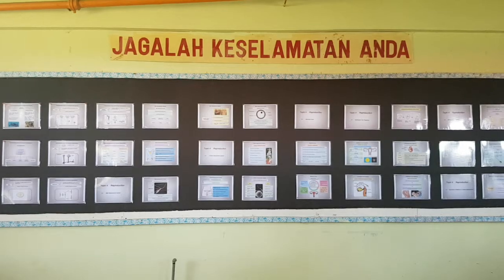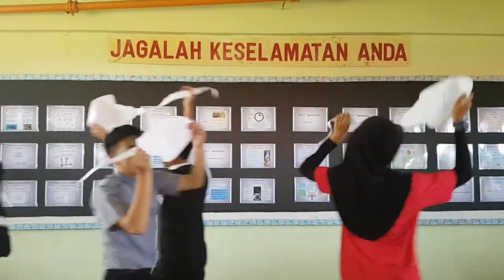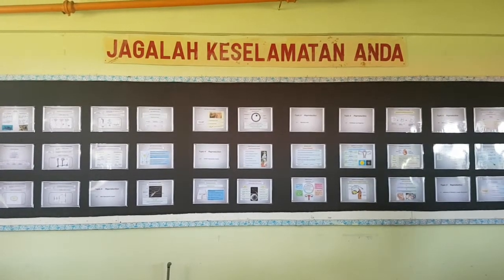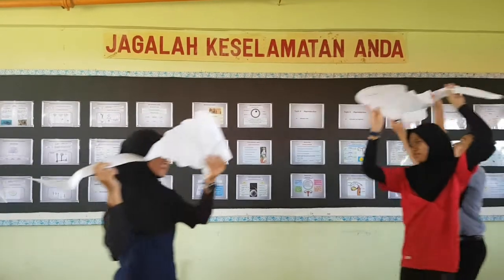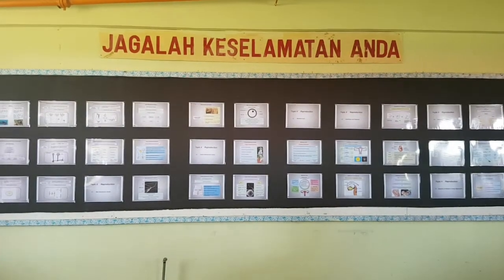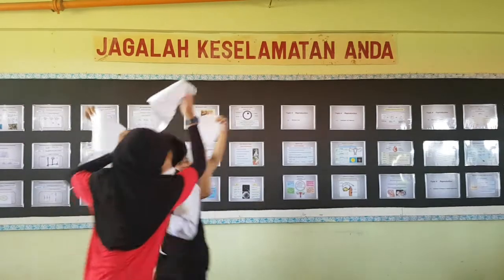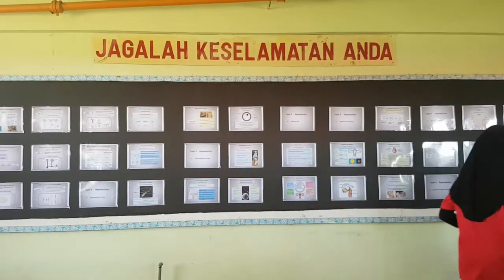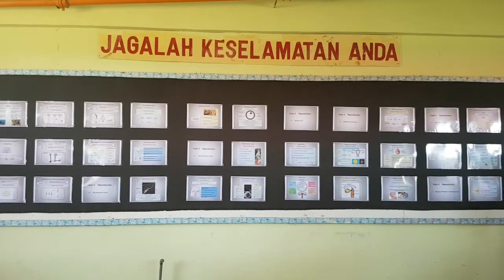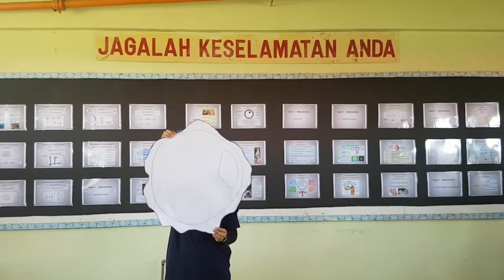Sperms in the vagina then swim through the cervix and up the fallopian tube. If there is an egg in it, all of the sperms will gather around the egg.